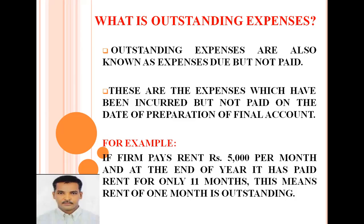For example, if a firm pays rent of Rs. 5,000 per month and at the end of the year it has paid rent for only 11 months, then rent for one month is outstanding. So Rs. 5,000 is the outstanding rent for one month, because the firm paid only for 11 months out of 12 months in a year.